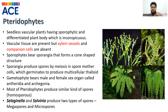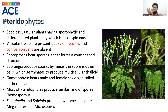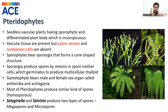The sporophytes bear sporangia-like structures that form spore-shaped bodies. These spores germinate — they reproduce via meiosis and form spore mother cells, which then later on germinate to produce a multicellular thallus-like structure. The gametophytes bear male and female sex organs, which are respectively called antheridia and archegonia, as discussed earlier.